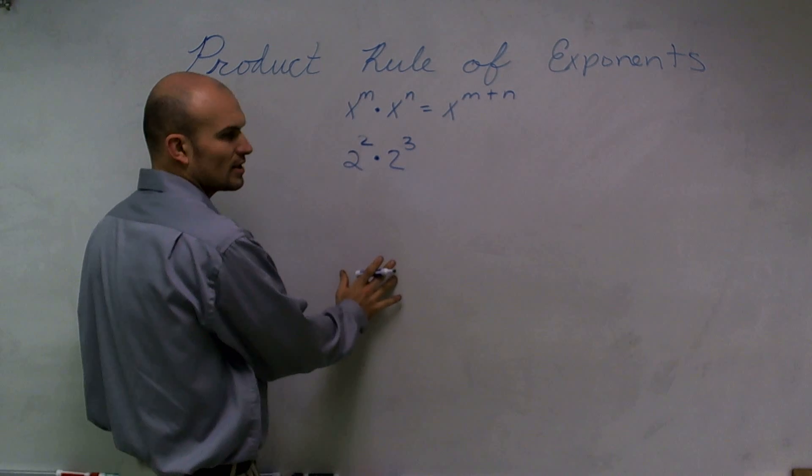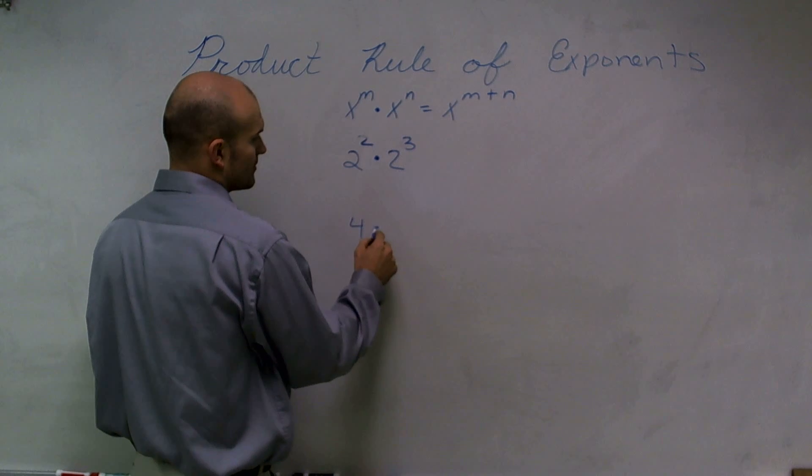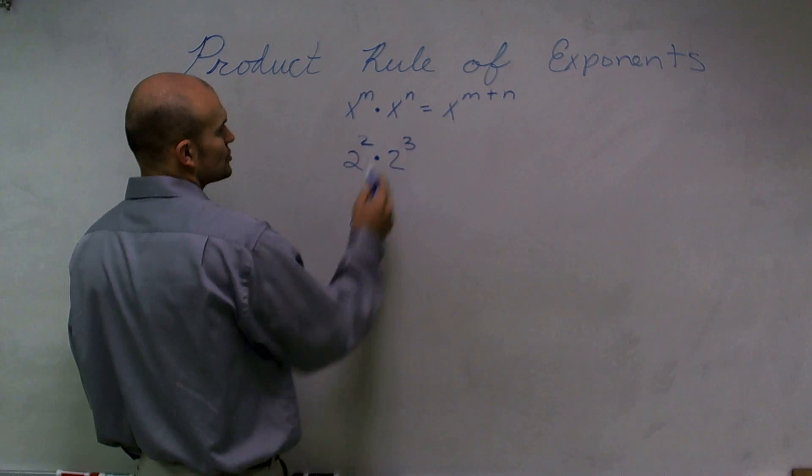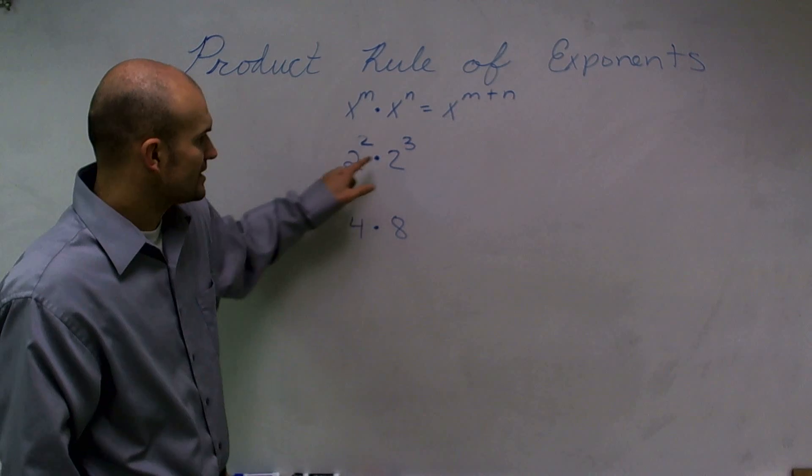And we're going to work on what the real solutions are down below. So 2 squared, we understand, is going to be 4 times, we have 2 cubed is going to equal 8.